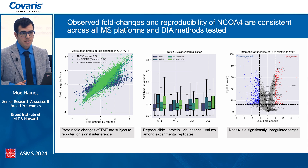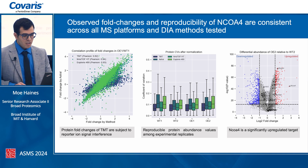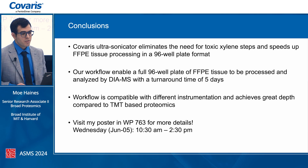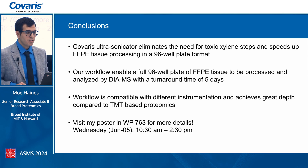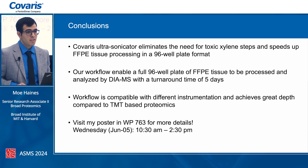Protein CVs were reproducible across all methods and tissue types. NCOA4 was among the most significantly upregulated targets, and we also identify related iron metabolism proteins. In conclusion, the Covaris ultrasonicator eliminates the need for xylene and speeds up the protocol to a 96-well plate format, allowing a full plate of macro-dissected material in about five days. Whether using TMT or DIA, you can achieve good depth as long as you have a good sample preparation process.